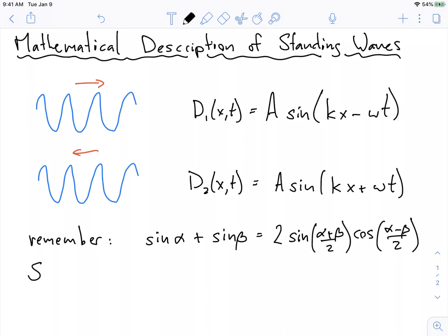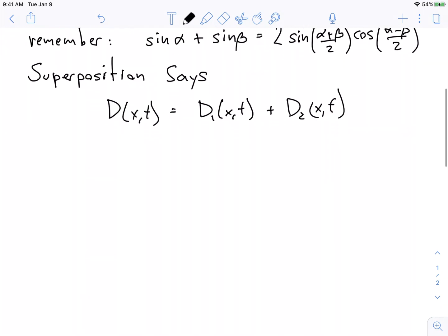Superposition says that my total D(x,t) is equal to D₁(x,t) plus D₂(x,t). What we're trying to do is figure out what does the amplitude look like if we have a wave traveling this way and a wave traveling this way that are identical to each other in every way except the direction they're going in.